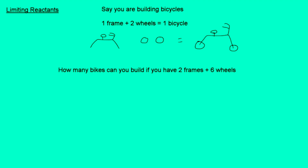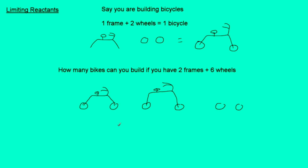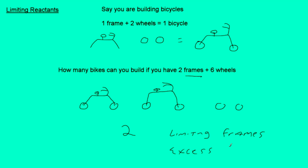Please excuse my artwork here, but if we have two frames and six wheels, we can only make two complete bicycles. What is limiting us from making a third bicycle? We don't have enough frames. So the limiting in chemistry would be called a reactant, but here we're talking about bicycles — so the limiting would be the frames. The frames limit us from making more bicycles. What do we have extra of? We call it excess. We have two extra wheels.